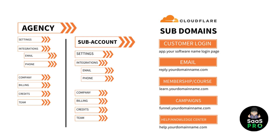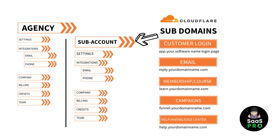As an agency, you're going to be in Settings and you want to make sure you have your integration set up, your company, billing, credits, and team set up — that's very important. The sub account will also have settings, integrations, company, billing, credits, and team. Once you set up your agency account, everything is built under your business. The sub account lets you bill customers directly, and if you're on SaaS mode, you can upsell and resell text and email features.